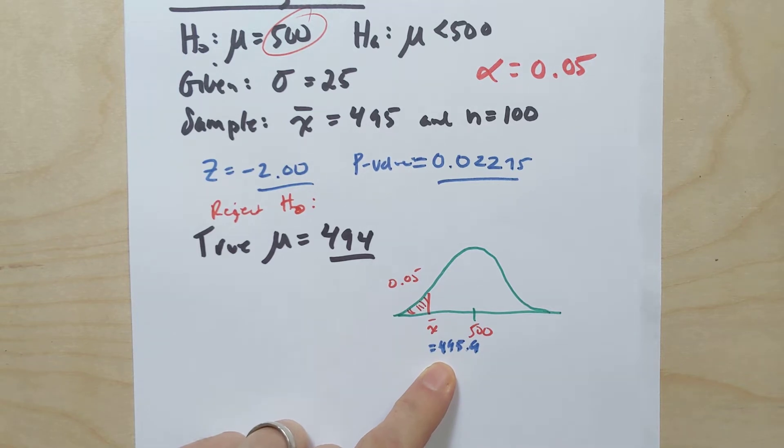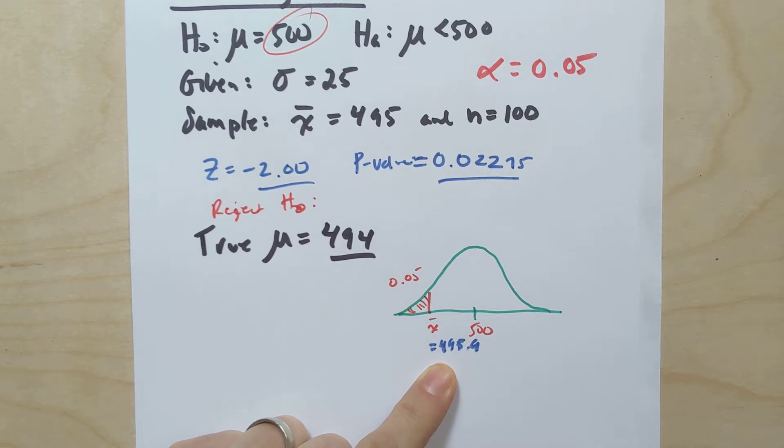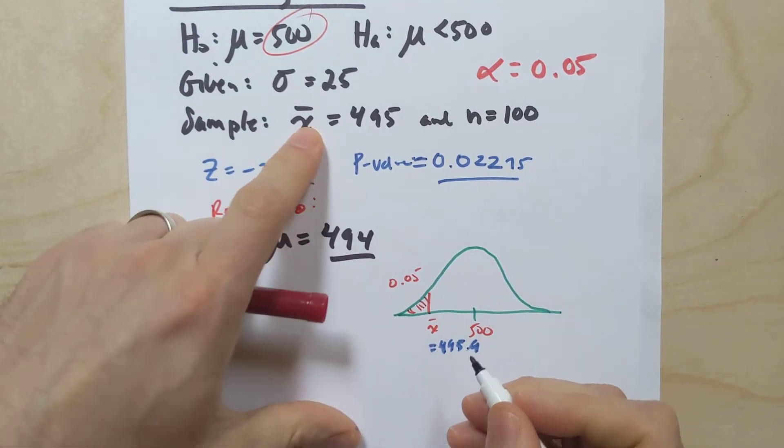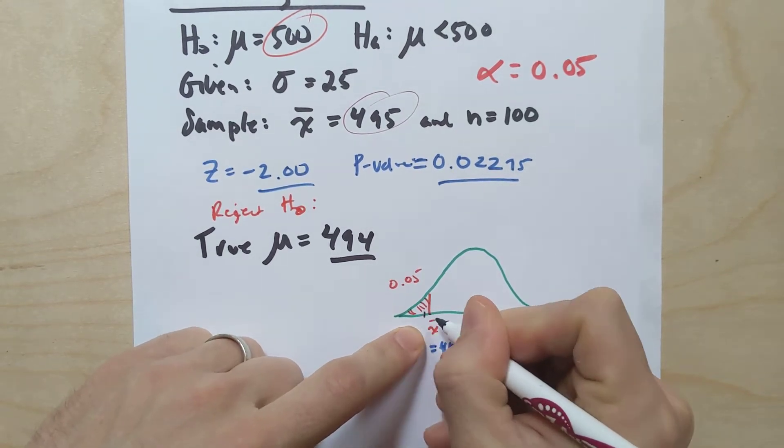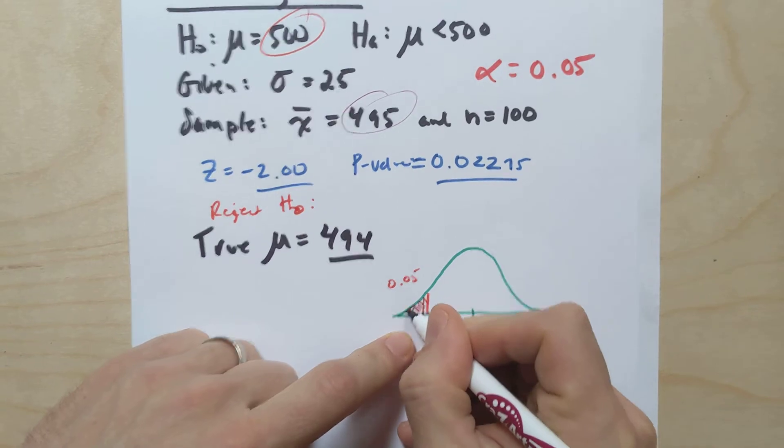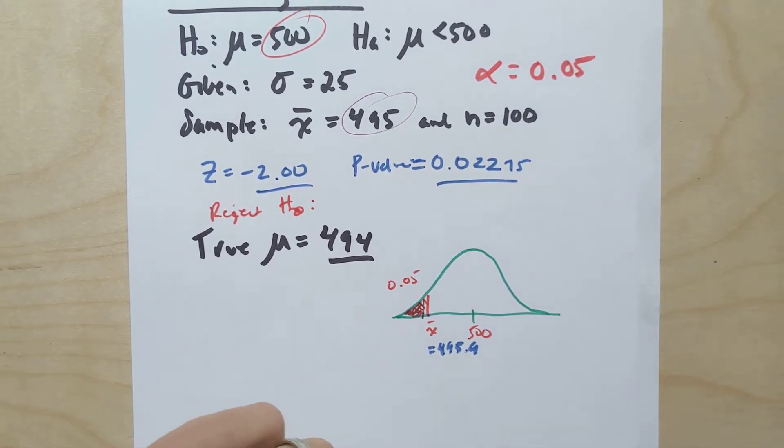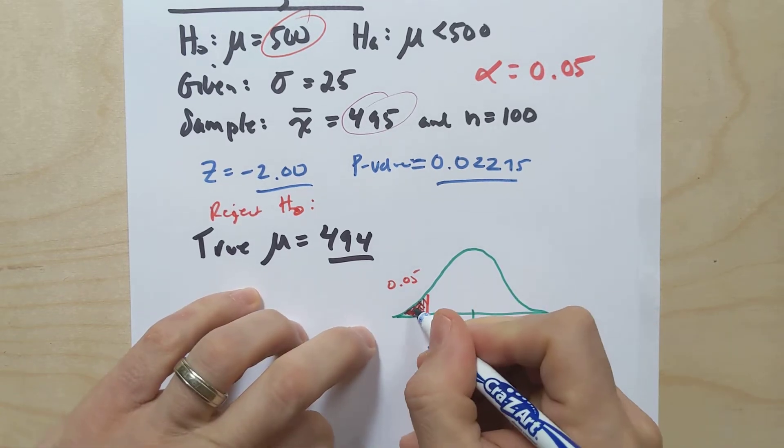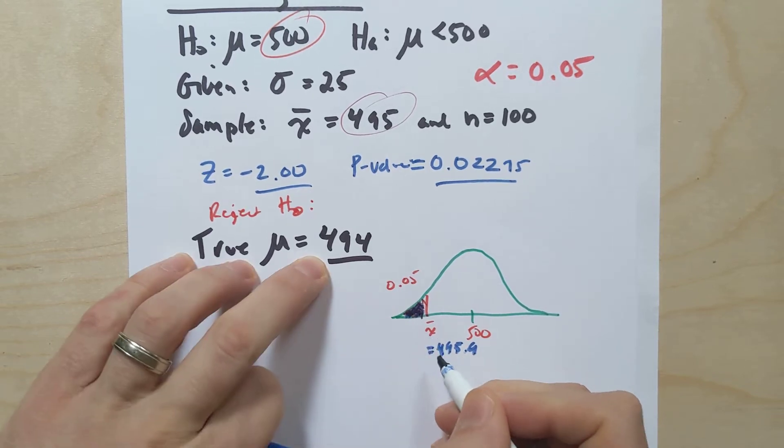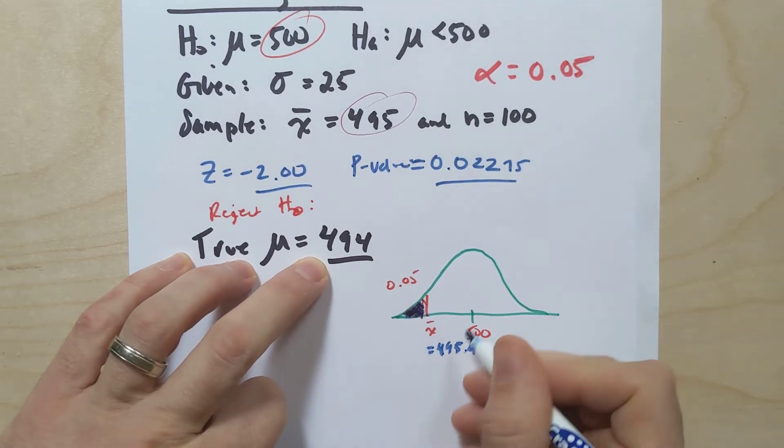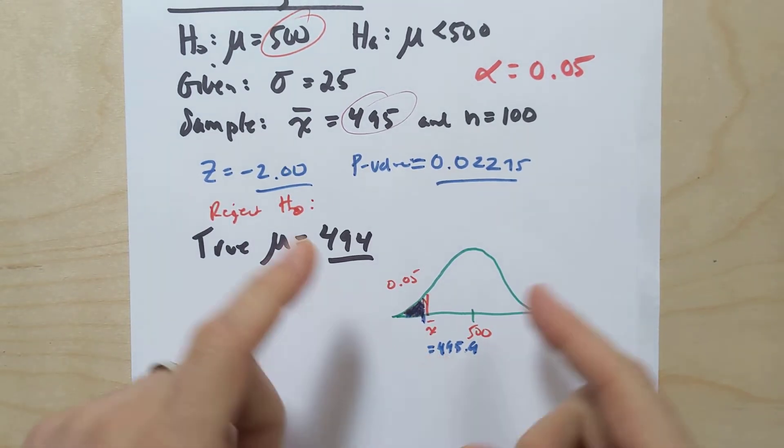So any sample means that I would get from this distribution that would be below 495.9 would cause me to reject the null hypothesis. Now, if you notice in this particular instance, that's exactly what I did, right? You'll see that the sample mean I actually got was 495, which was like just a little bit less. And so we ended up getting a p-value that was just a tad bit less because my sample mean of 495 was just a little bit less than 495.9. So that is why I rejected the null hypothesis.